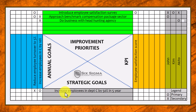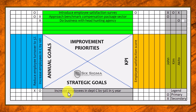We start basically at the bottom, where one or multiple strategic goals are formulated by an organization. A strategic goal has a long-term perspective — we talk about strategic goals when we have goals for the coming three to five years. For a fictional organization, their strategic goal was to increase employees in Department C by 50% in five years.